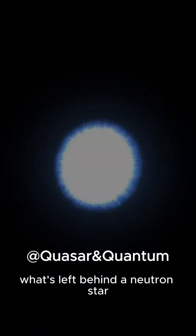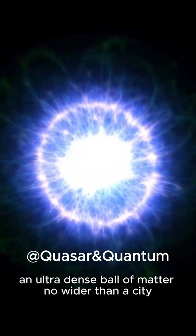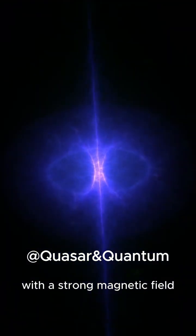What's left behind? A neutron star, an ultra-dense ball of matter no wider than a city. And if that neutron star is spinning fast, with a strong magnetic field, it becomes a pulsar.